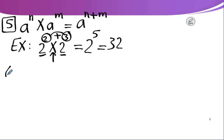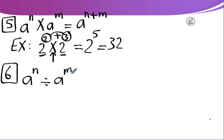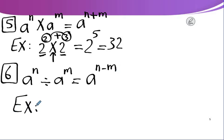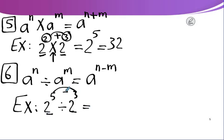Rule number 6: A to the power n divided by A to the power m equals A to the power (n − m). For example, 2 to the power 5 divided by 2 to the power 3: the bases are equal, so subtract the powers. It will be 2 to the power 2 equals 4.